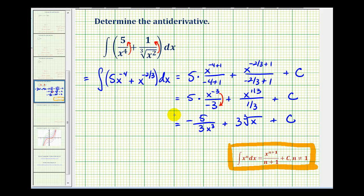So this antiderivative has a derivative of the original integrand of five divided by x to the fourth plus one divided by the cube root of x squared. So you may want to take the time to verify that, or we're going to go ahead and stop here for this video. I hope this was helpful.